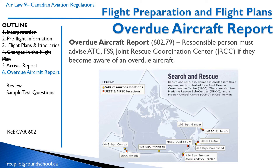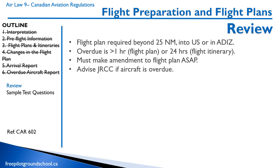That concludes this lesson. We're now going to quickly review and get on to our sample questions. Quick review: a flight plan is required beyond 25 nautical miles or into the United States or the Air Defense Identification Zone. Overdue is defined as one hour after the ETA on a flight plan, or 24 hours for a flight itinerary. You have to make amendments as soon as possible and advise ATC or the Joint Rescue Coordination Center if the aircraft is overdue.